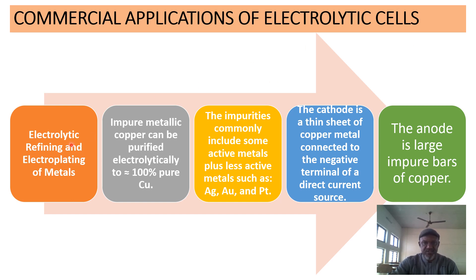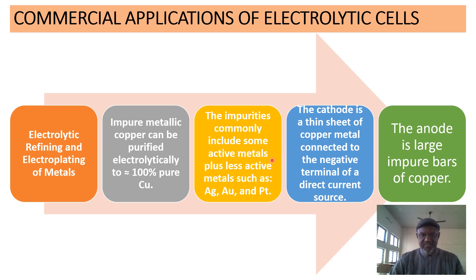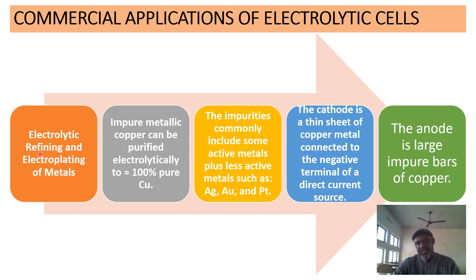For commercial applications, consider electrolytic refining and electroplating of metals. Impure metallic copper can be purified electrolytically to 100% pure copper. Impurities commonly include some active metals plus less active metals. The cathode is a thin sheet of copper metal connected to the negative terminal of a direct current source. The anode is large bars of impure copper.